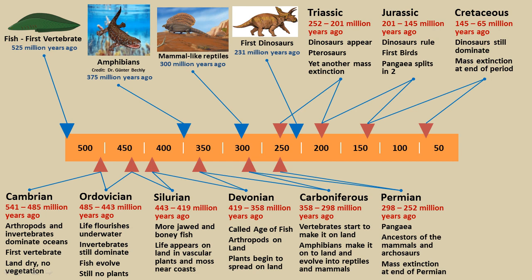During the Cambrian, the land was dry with absolutely no plants or vegetation. The next time period is called the Ordovician, occurring between 485 and 443 million years ago. Life flourishes underwater and fish are starting to evolve into larger organisms, but there are still no plants or vegetation on land. Land would have looked like a barren wasteland, probably somewhat reddish in nature.